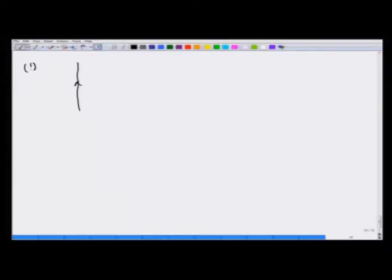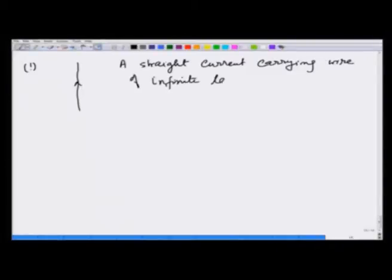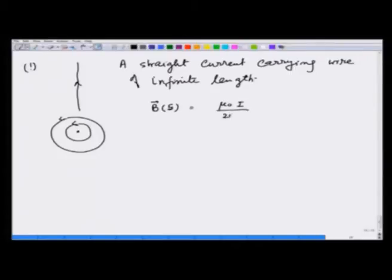Let us now take examples and solve some problems where we calculate the magnetic vector potential. Example 1: I will take a straight current carrying wire of infinite length. In this case we just saw in the previous lecture that the B field goes around in circles, and therefore I can write B at a distance s equals mu naught I over 2 pi s in the phi direction.